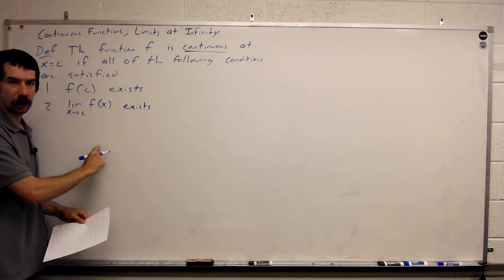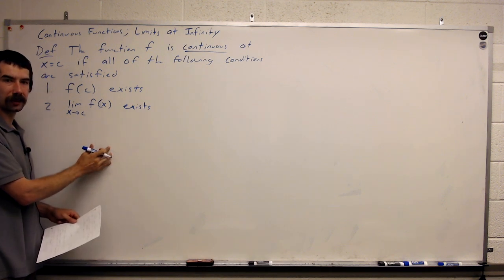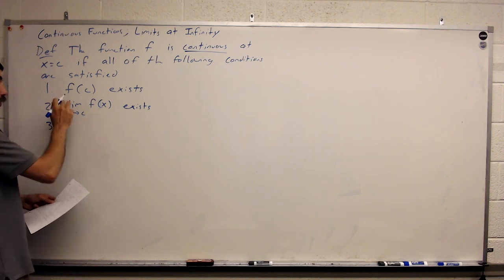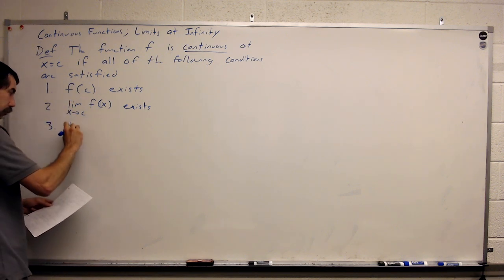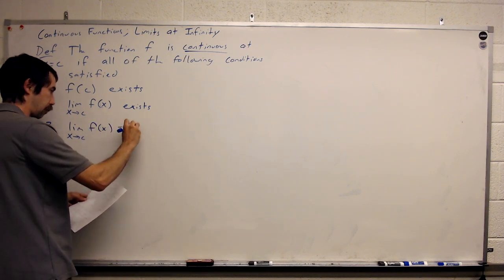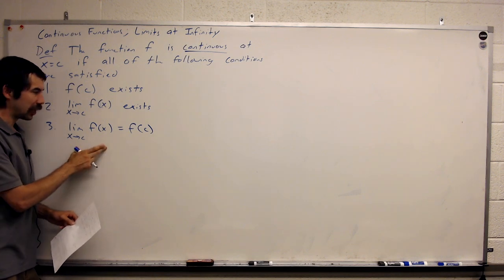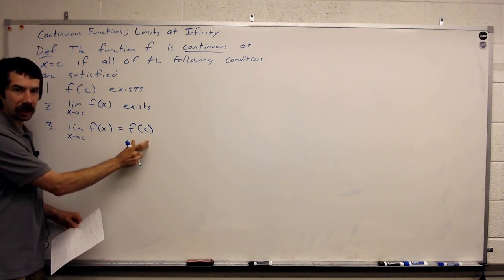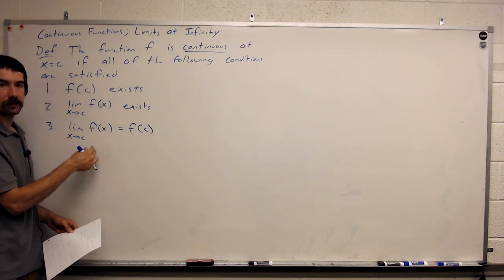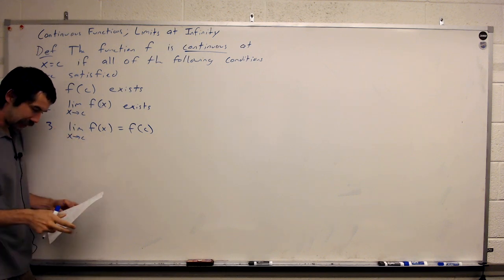So as we're traveling along the curve from the left-hand side, we get the same value as if we were to travel along the curve from the right-hand side. And then the final condition: these two values are the same. So if the limiting value equals our function's value, and they both exist as numbers and they're the same, then our function is continuous at this value.